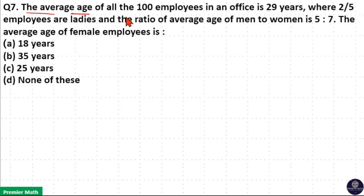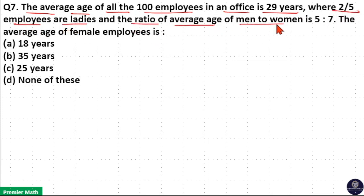The average age of all 100 employees in an office is 29 years, where 2/5 of employees are ladies and the ratio of average age of men to women is 5:7. The average age of female employees is?